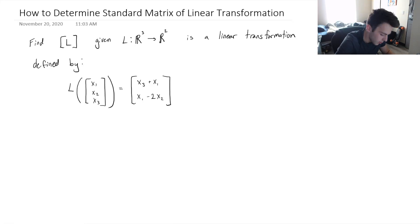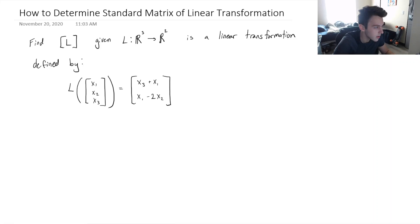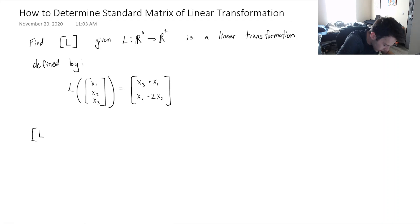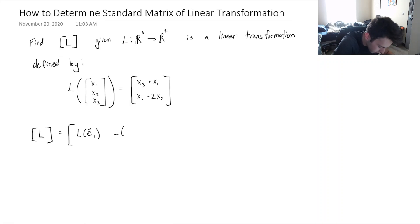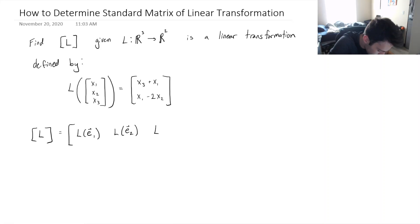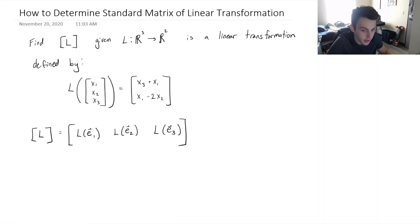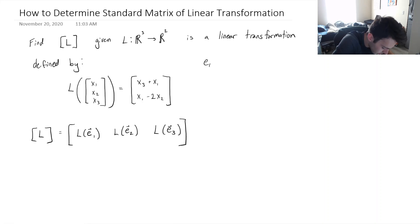When the linear transformation is defined for us, it's actually really easy. Since we're starting in R3, there are going to be three basis vectors, which means our standard matrix will have three columns, each column being the transformed version of each basis vector of R3. So all we have to do is calculate what these things are. We know that E1 is equal to (1, 0, 0), because this is a basis for R3.